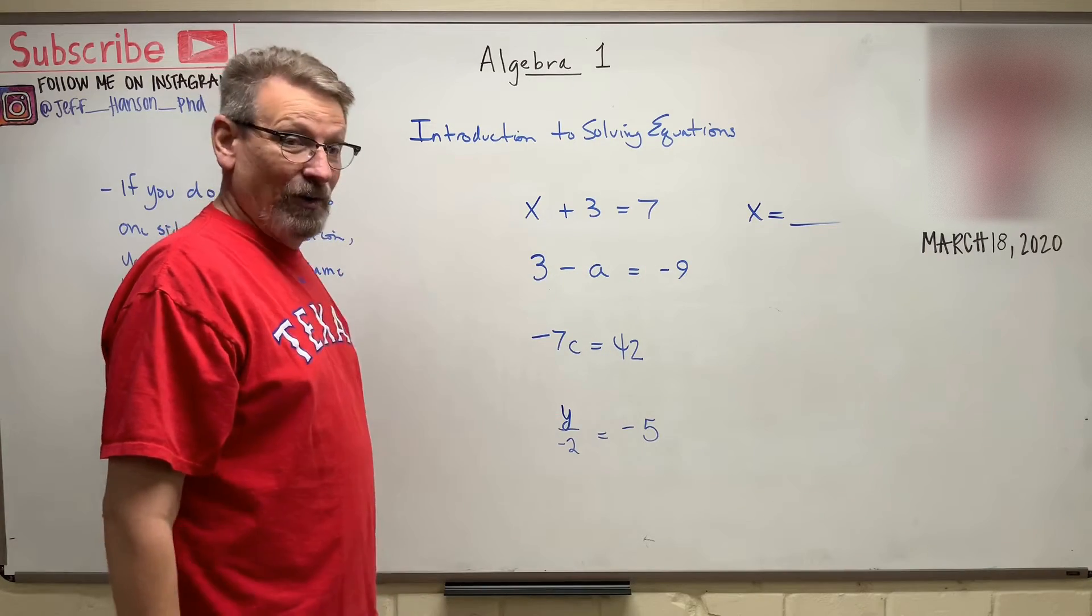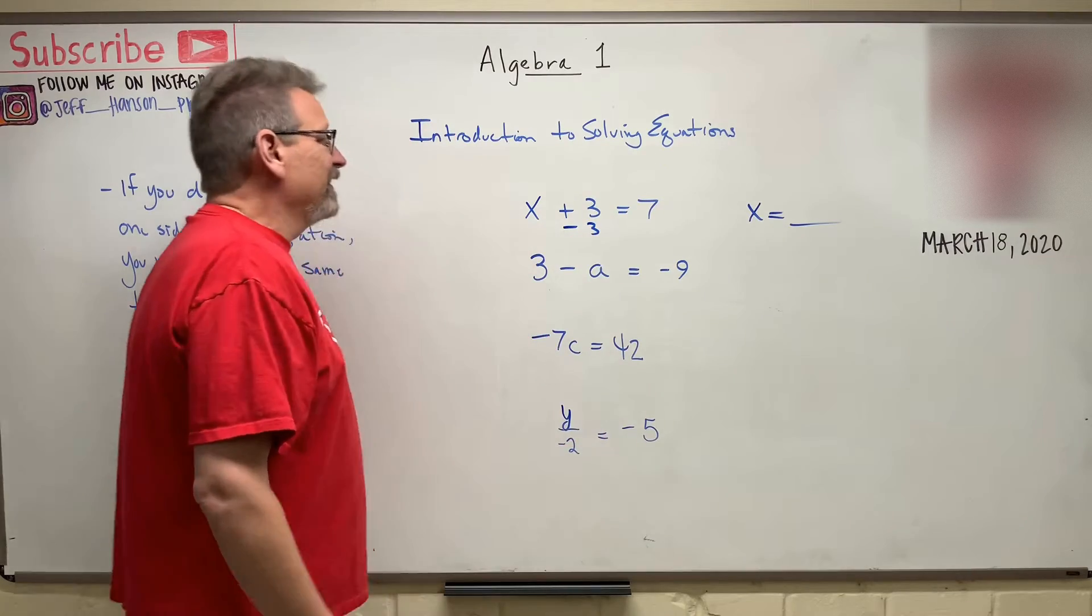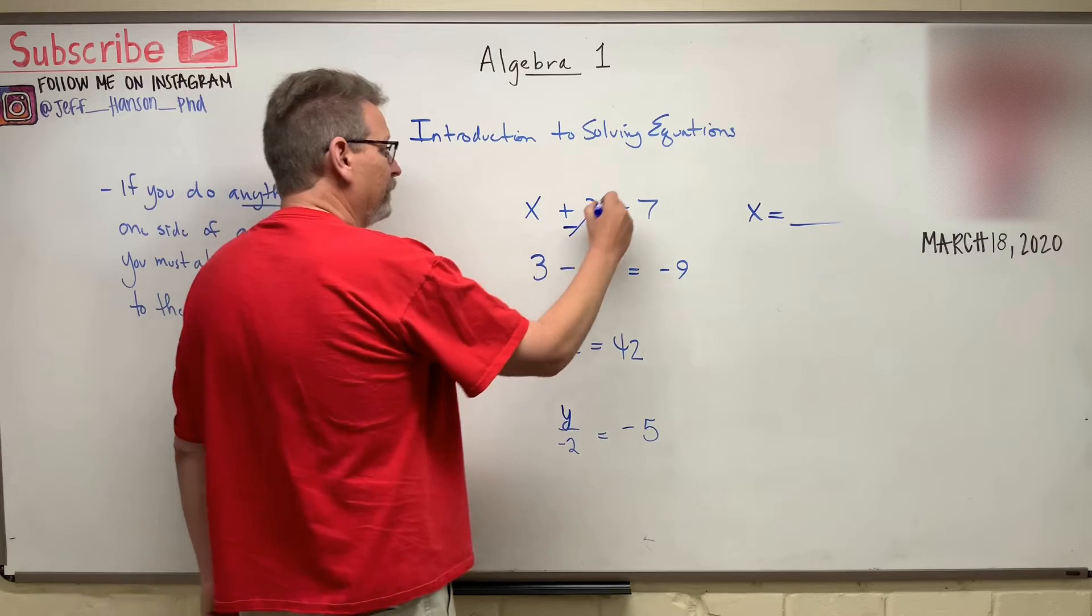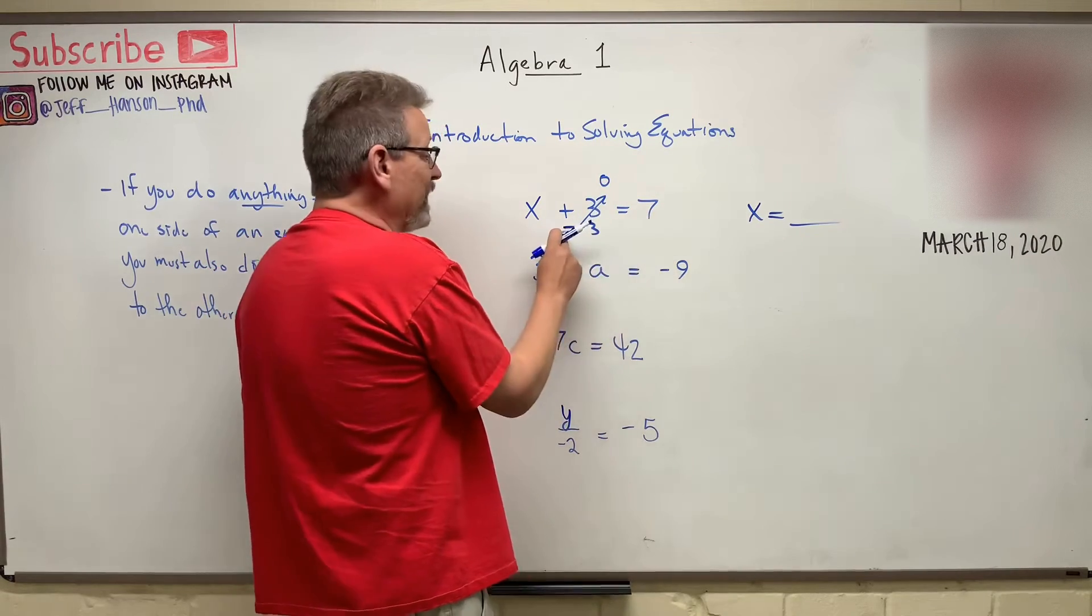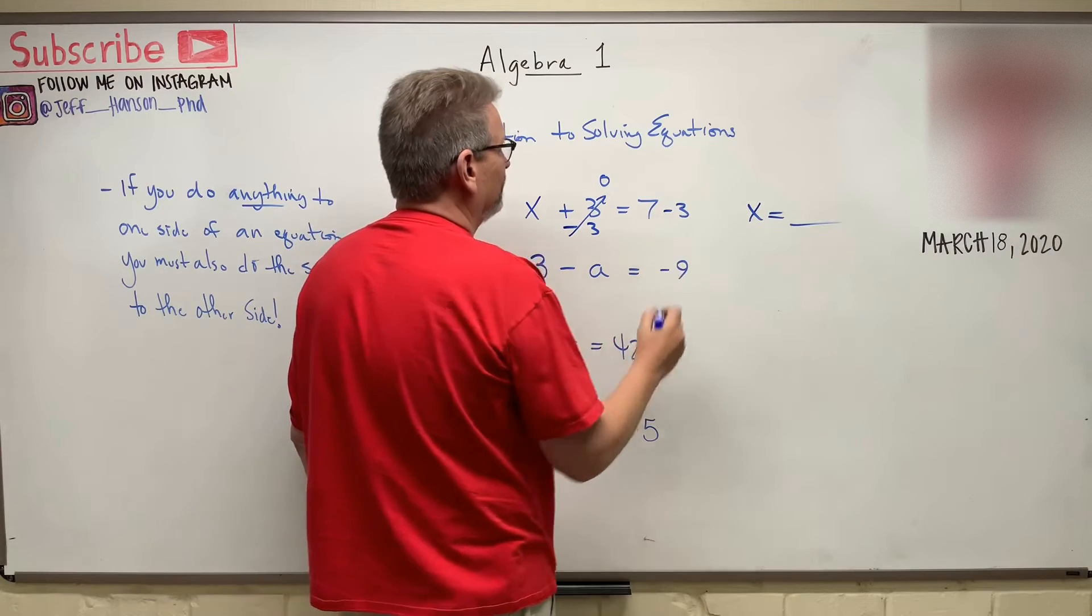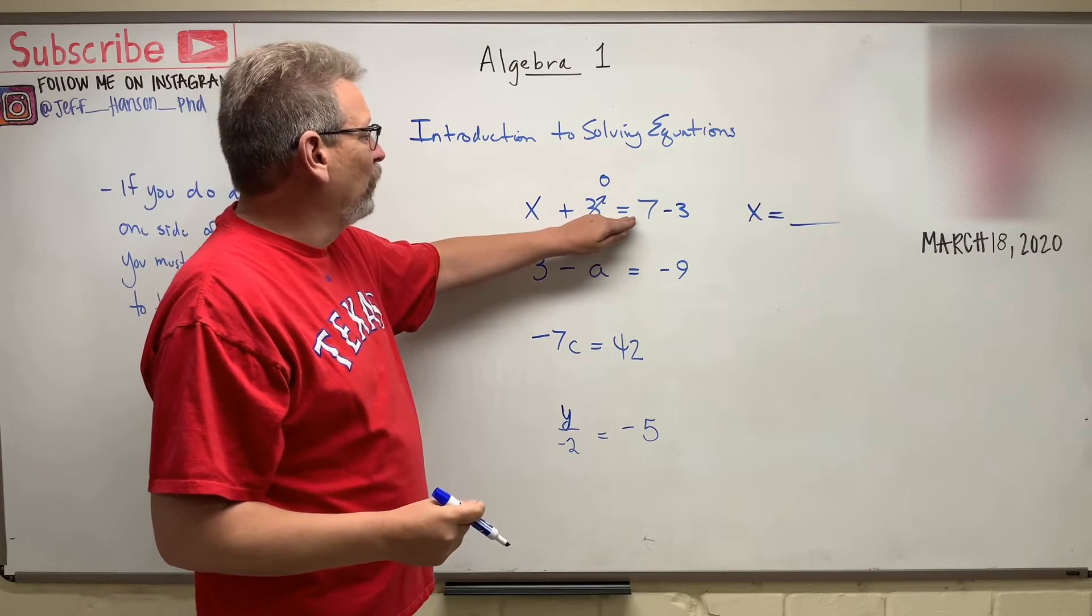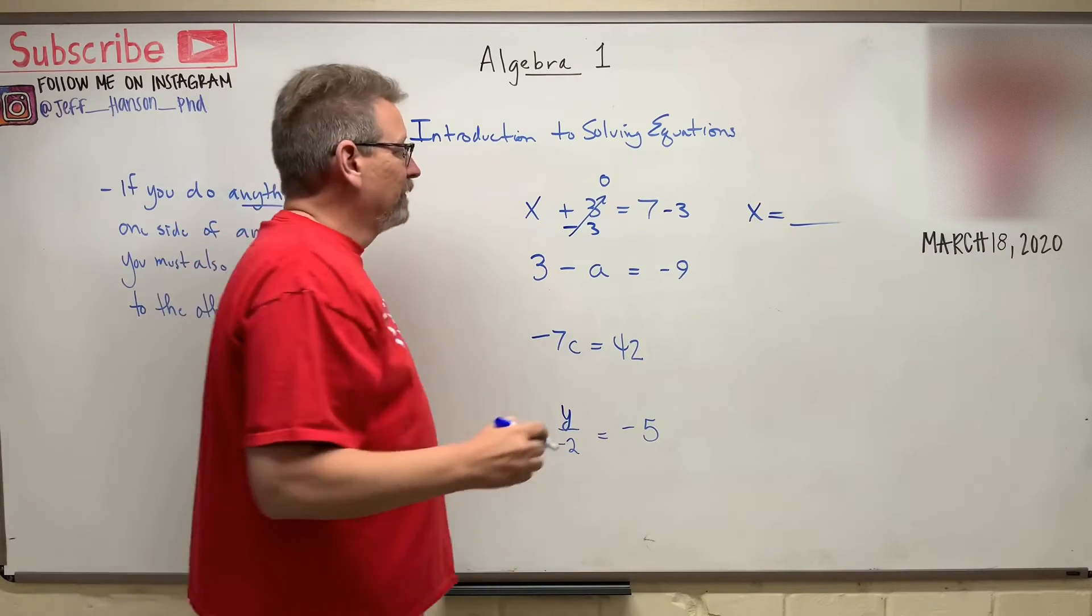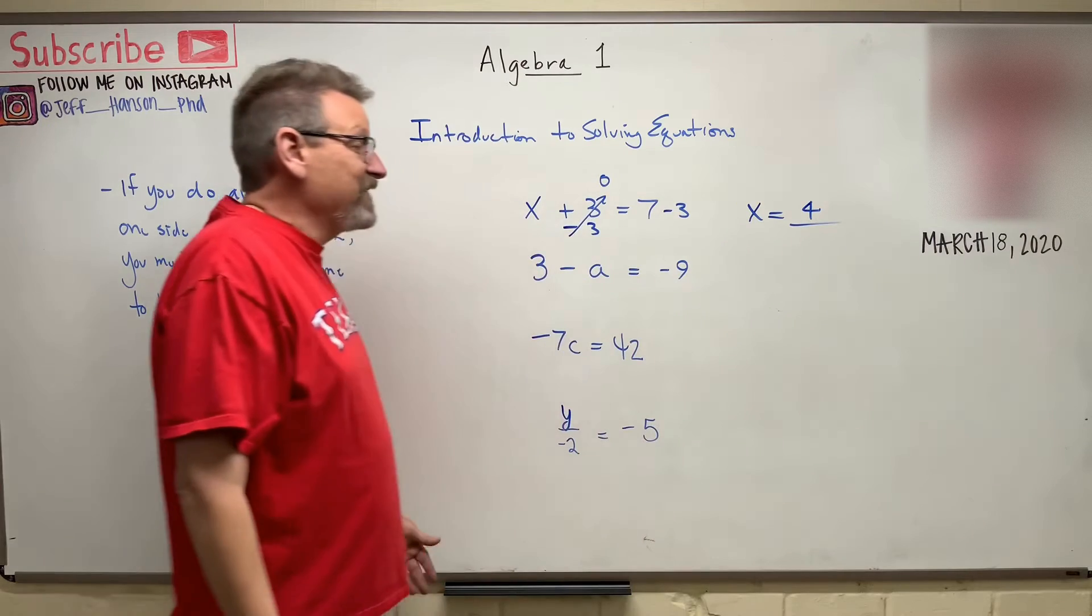Well, I'll tell you how to make a three go away. You just subtract three. Three minus three leaves you how much? Zero. And then what do I have to do to this side? I took three off of this side, so what should I do over here? Take three away. So X is equal now to seven minus three. And seven minus three is four. You see how easy that is?